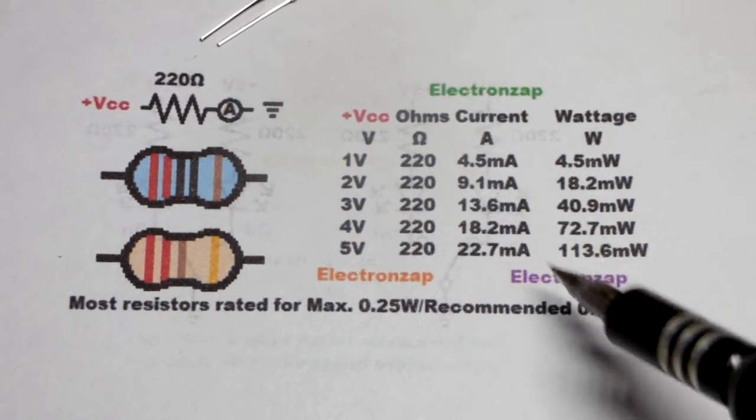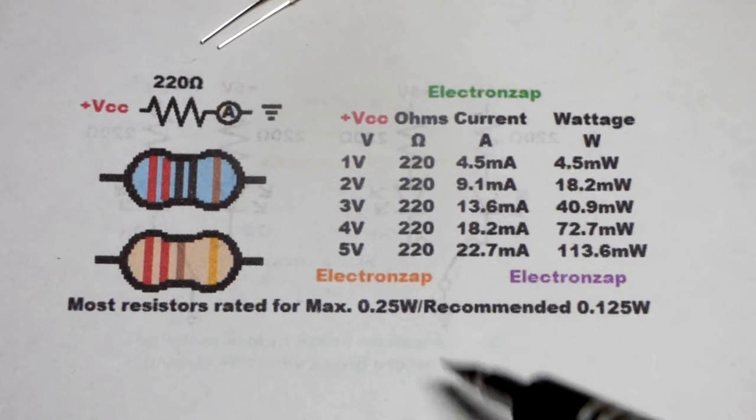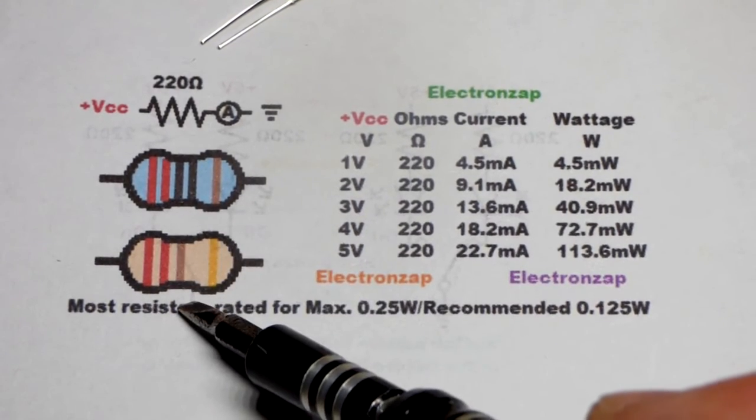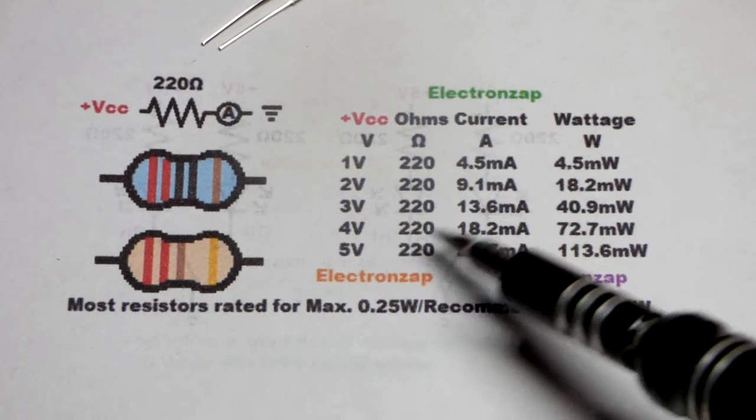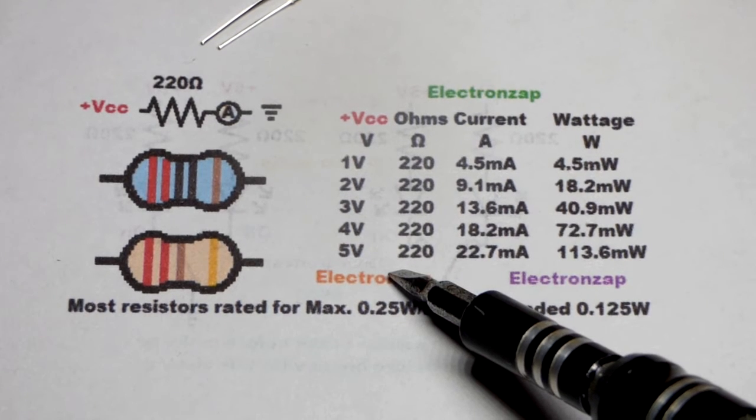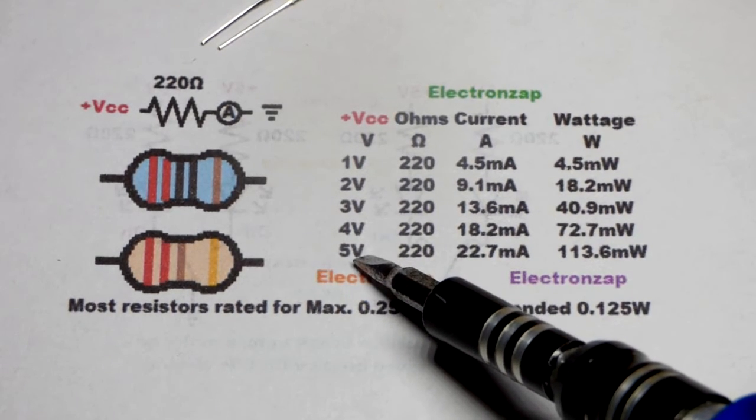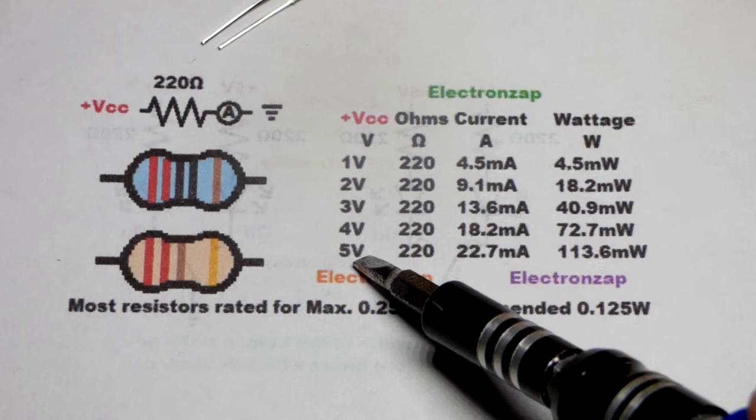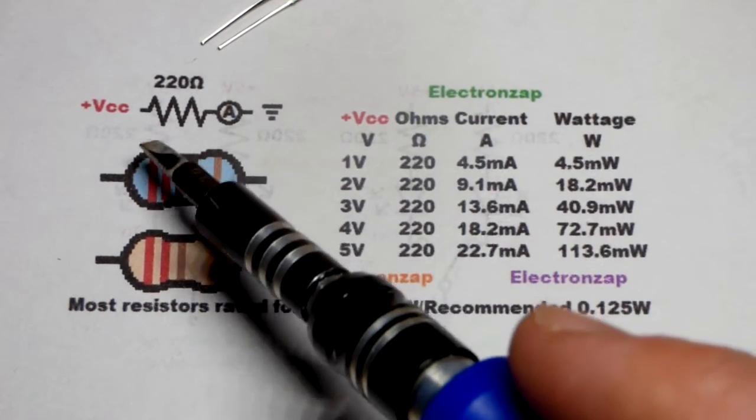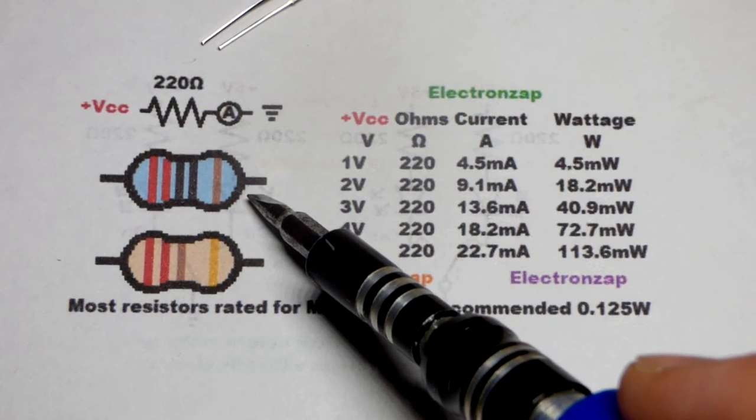But yeah, this is just kind of stuff to keep in mind whenever you're working with in this case a 220 ohm resistor. It's a good thing to kind of write something out like this for whatever value resistor you're using and the voltage that you're using. Now in a 5 volt circuit.